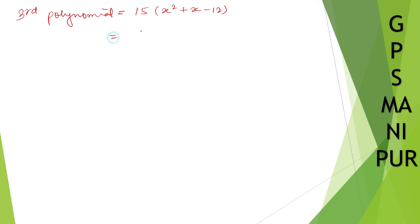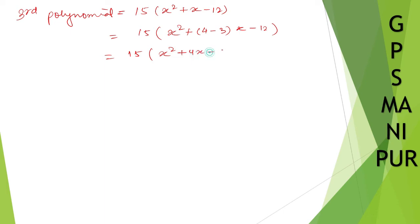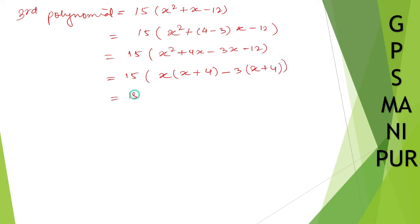To split the middle term of 15x² + x - 12: we use 4 and -3, since 4 × (-3) = -12 and 4 + (-3) = 1. So we write 15x² + 4x - 3x - 12. Taking x common gives x(15x + 4), and taking -3 common gives -3(x + 4). Wait — this gives (x + 4)(15x - 3), which simplifies to (x + 4) and (x - 3) with 3 taken common.